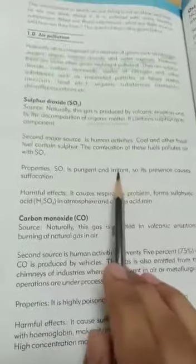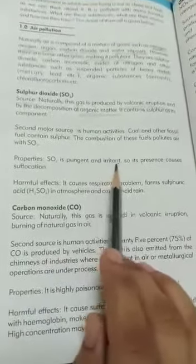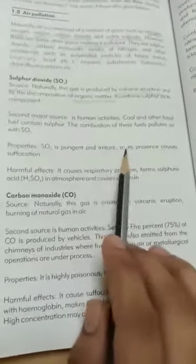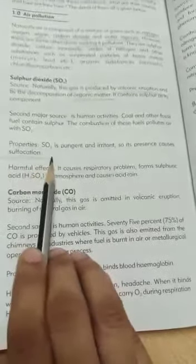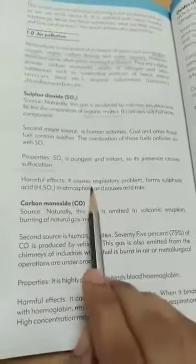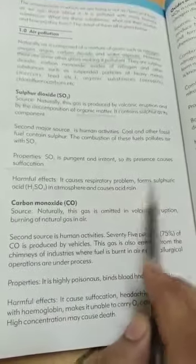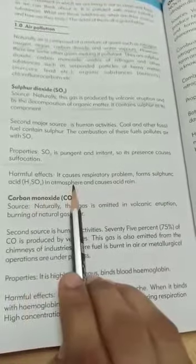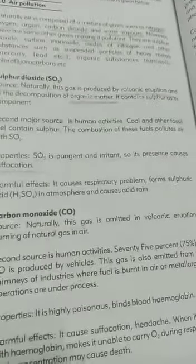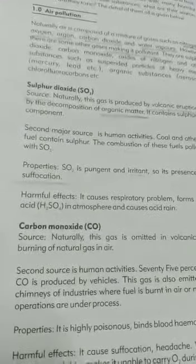Properties of sulfur dioxide: it is pungent — meaning it has a bad smell — and it is an irritant, causing irritation and breathing problems. Its presence causes suffocation — daam ghutna — means aapko saans lene mein problem feel hogi. Harmful effects: it causes respiratory problems, forms sulfuric acid in the atmosphere, and causes acid rain. Acid rain means the rain becomes acidic in nature, which is very harmful for us.